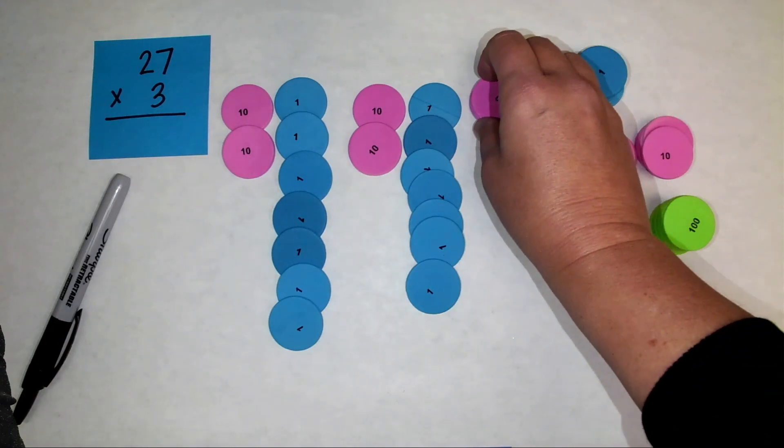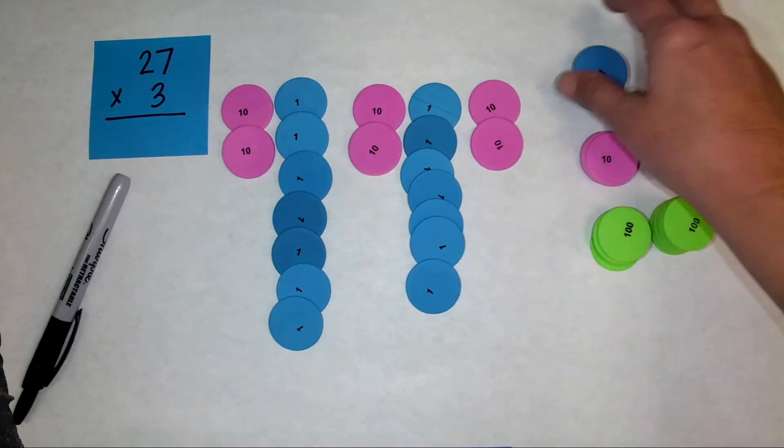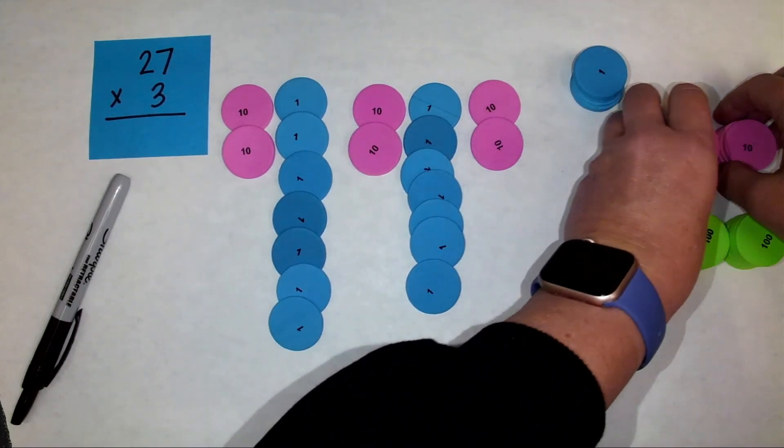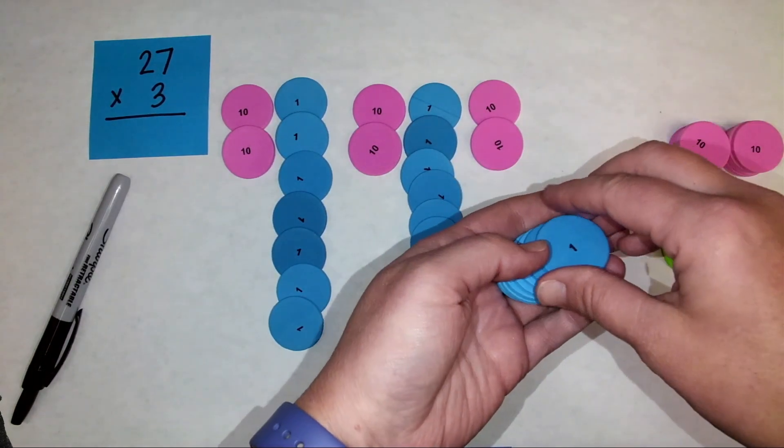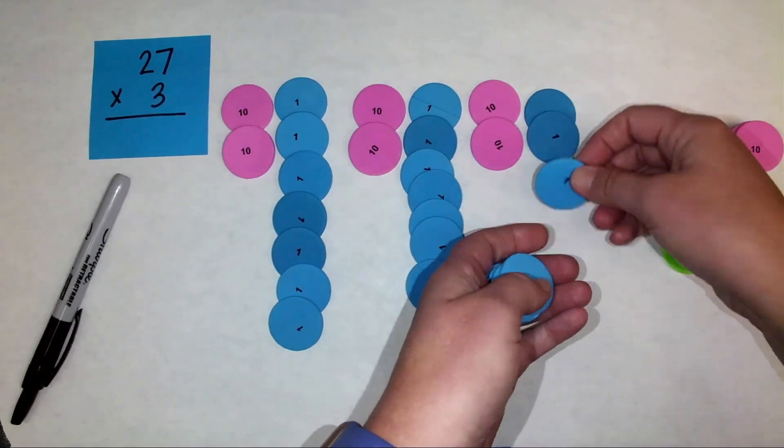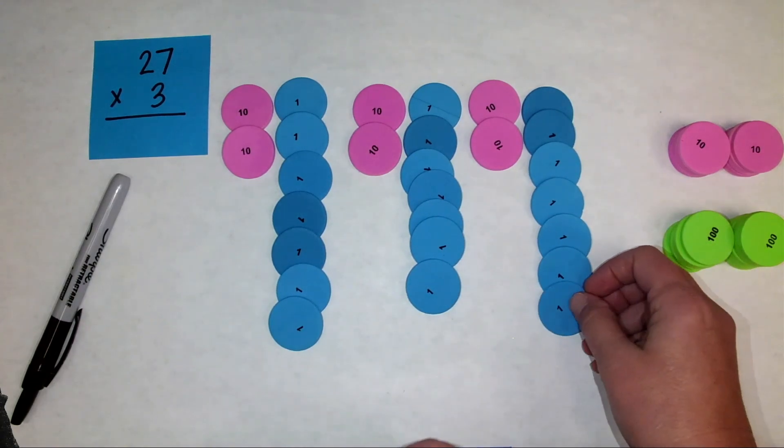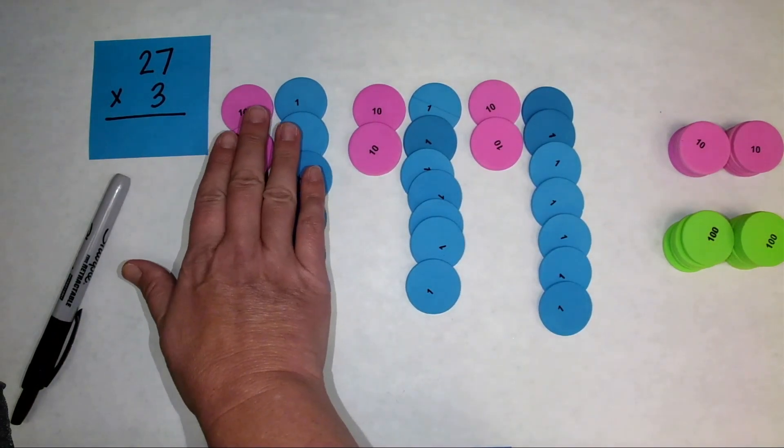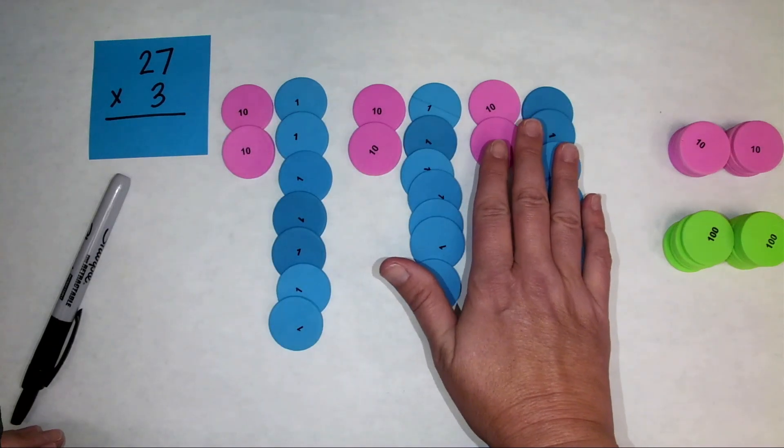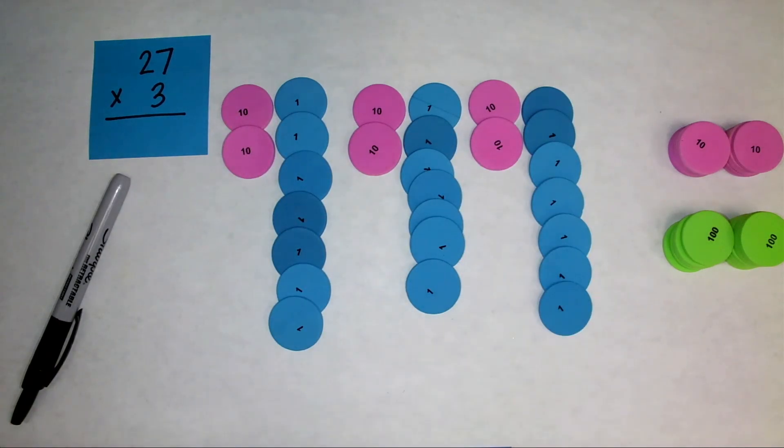And then a third group of 27. Two tens. I'm going to move these over just a bit so they don't get in my workspace, and then seven ones: one, two, three, four, five, six, seven. So now we have 27, 27, 27. So we have three groups of 27.